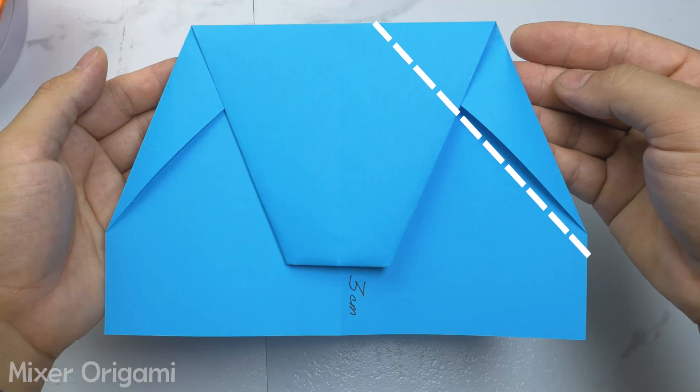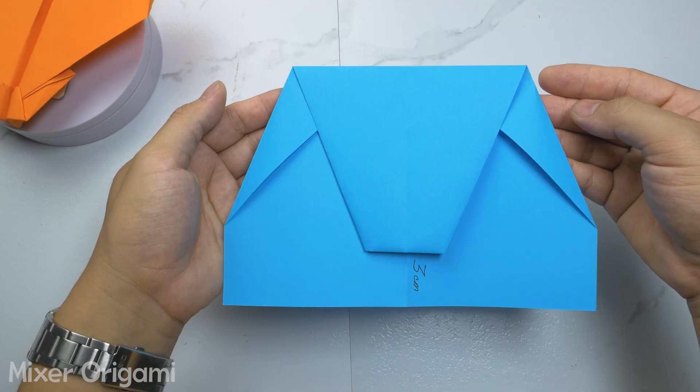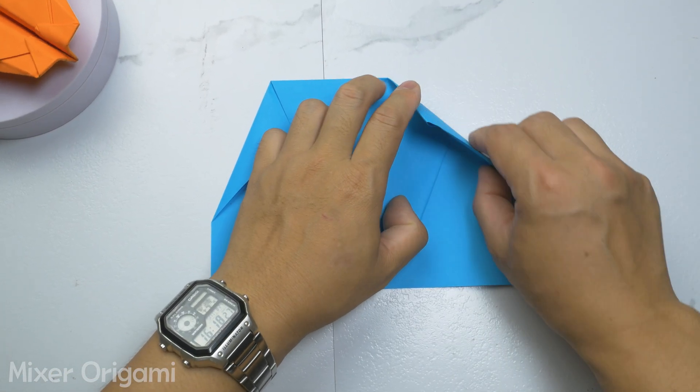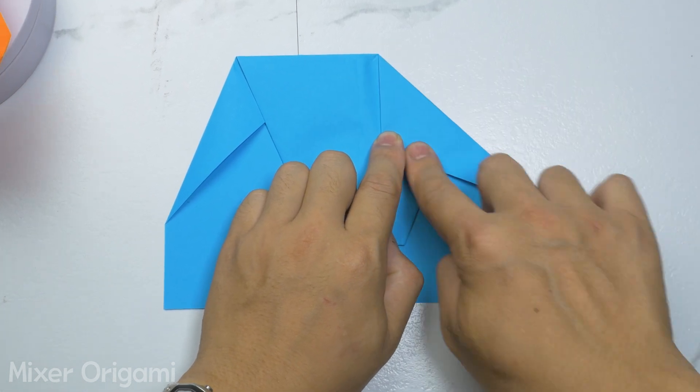Step 7. Fold the right wing of the paper airplane down below as shown in the video. Remember to use your finger to flatten the paper so that it doesn't bulge.